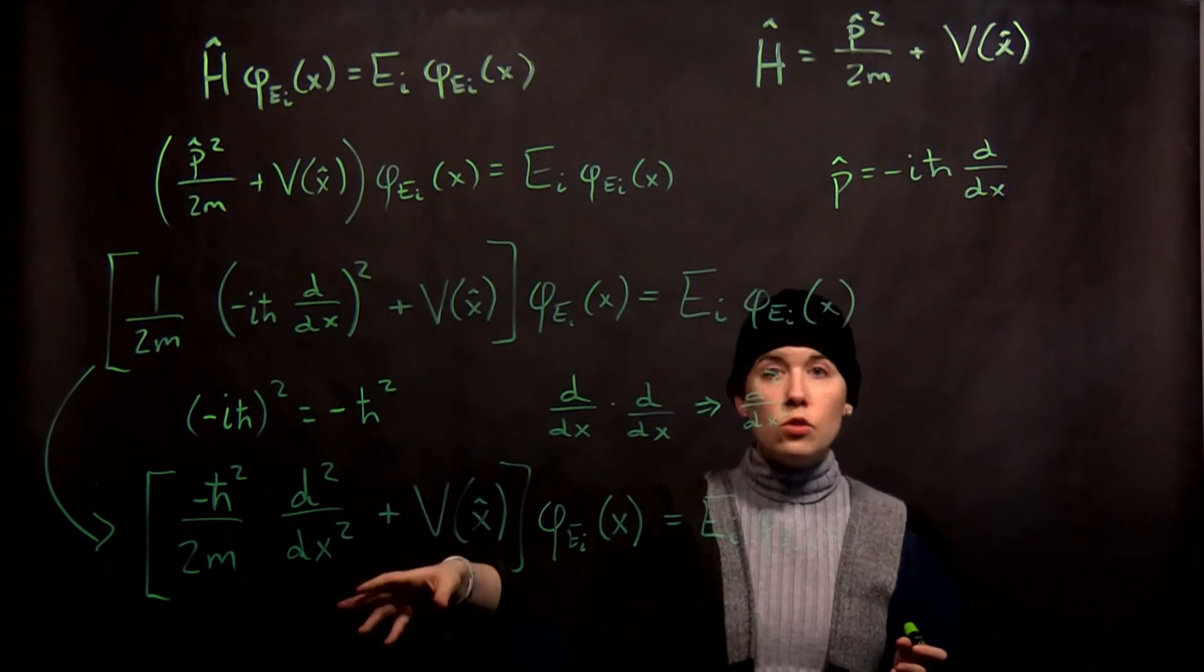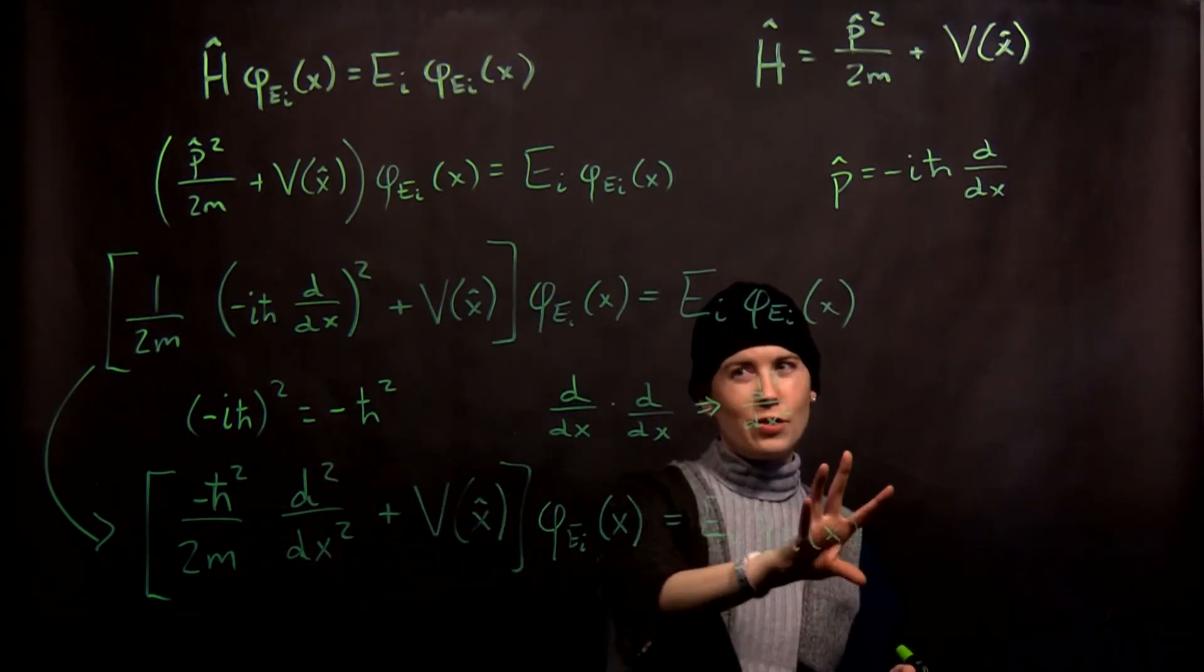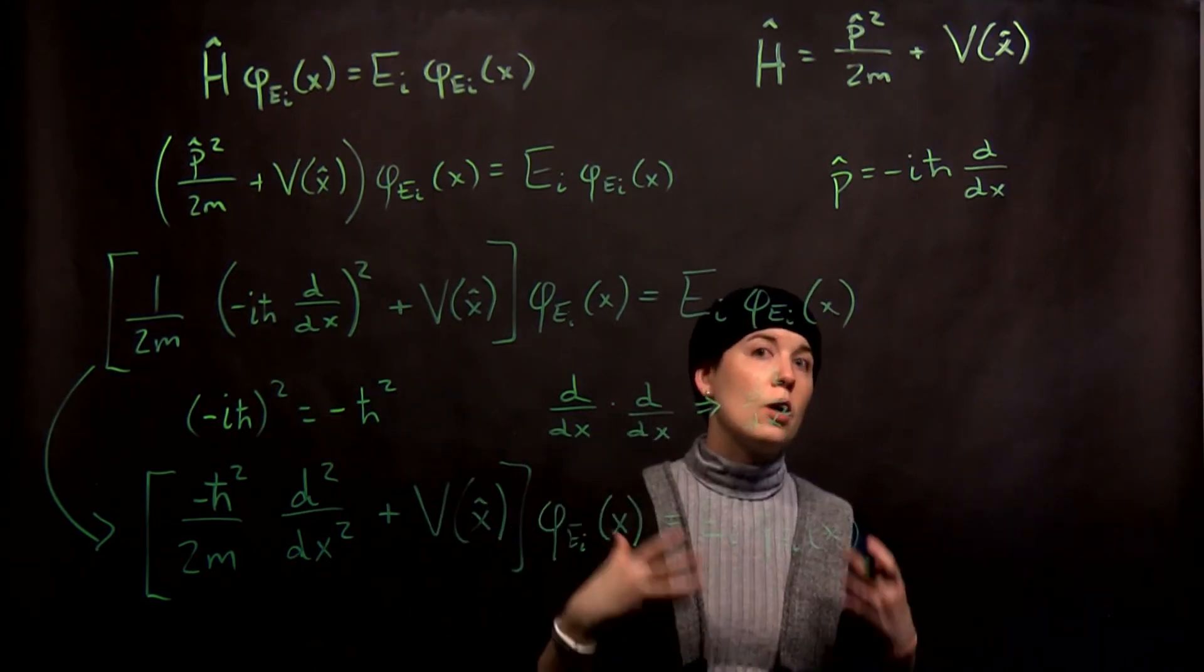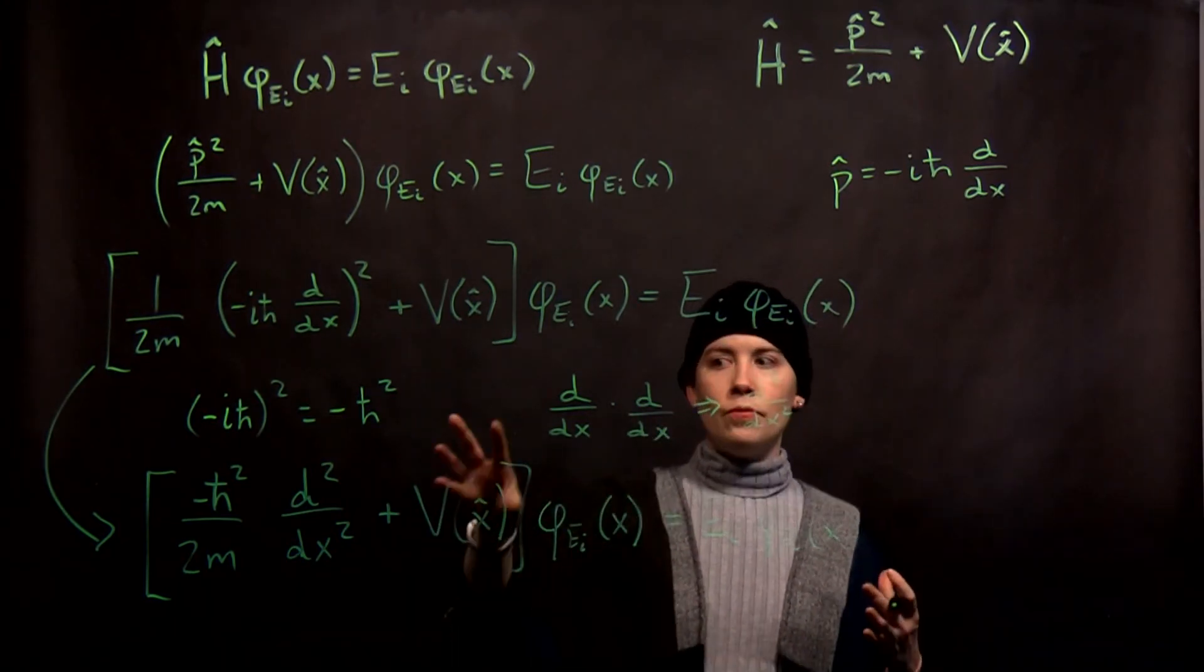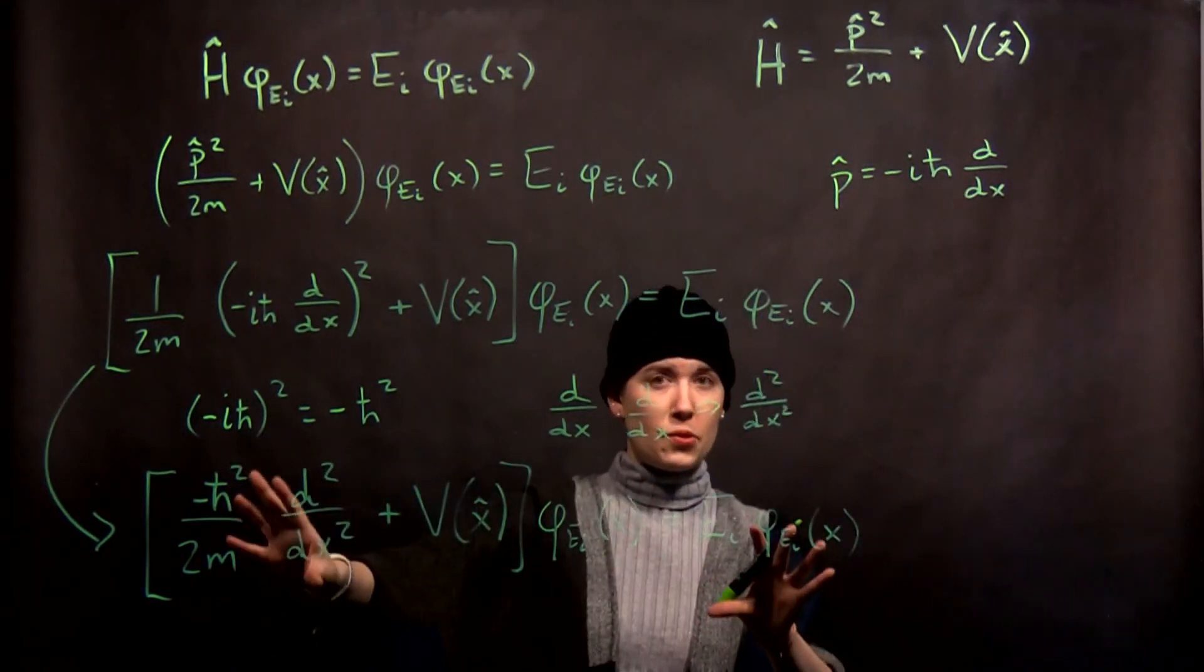And so this tells you that there's a relationship between our second derivative of our function and the function. This is really what makes it messy. And so we're going to start with really simple potential terms, so that we can really focus on these two pieces.